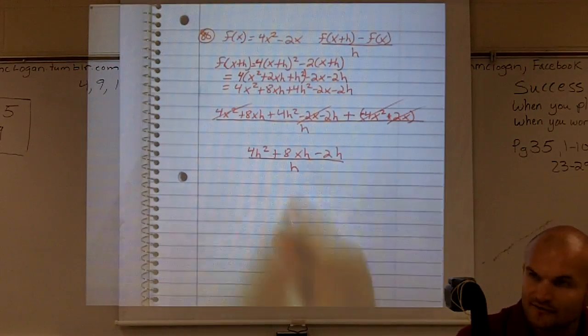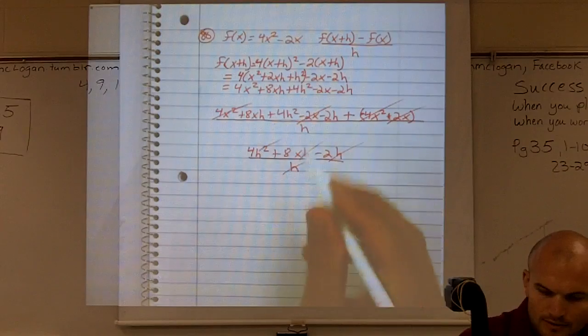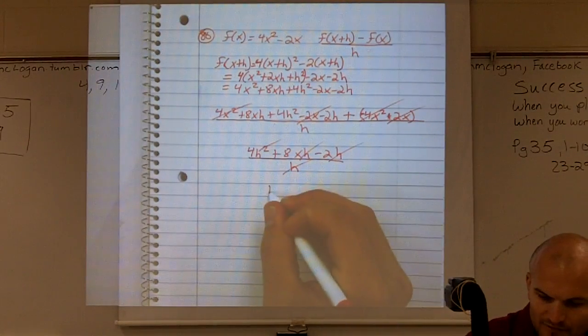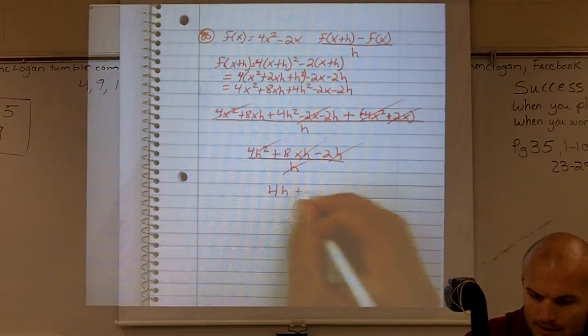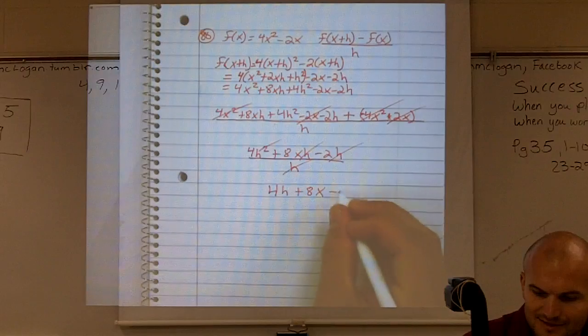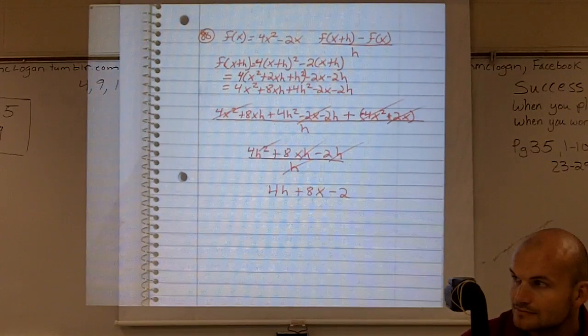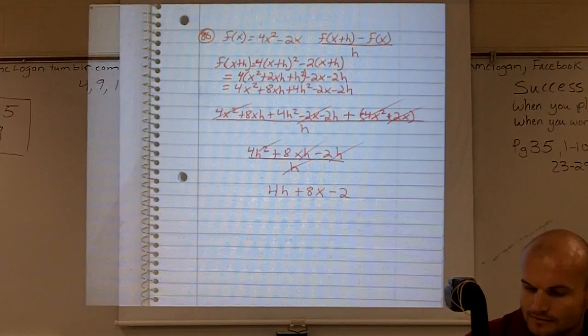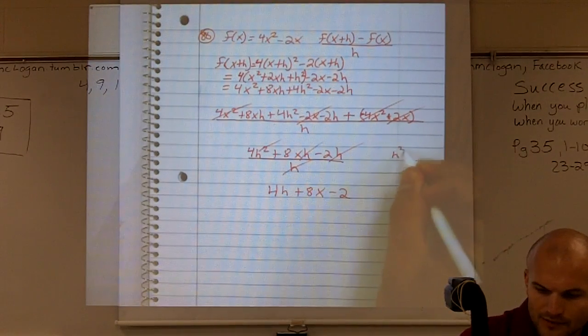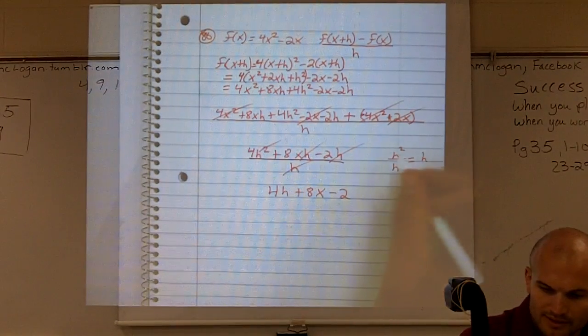Now, the last thing I notice is I can factor out an h, or cancel out an h. So therefore, the final answer for my difference quotient, simplified, would be 4h plus 8x minus 2. Because, you know, h squared over h equals h. Remember that? Okay.